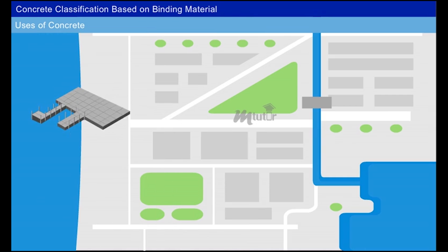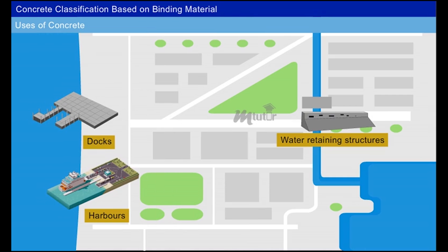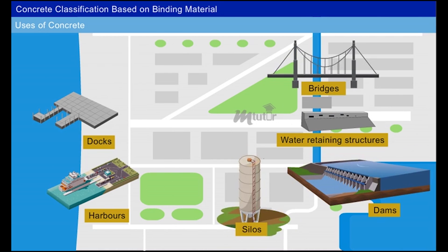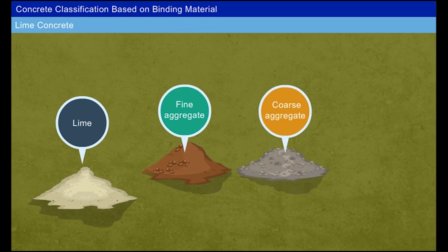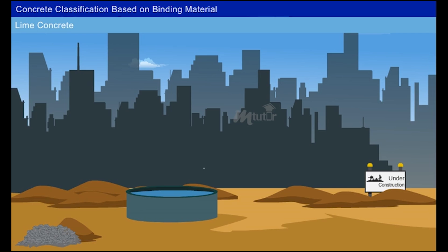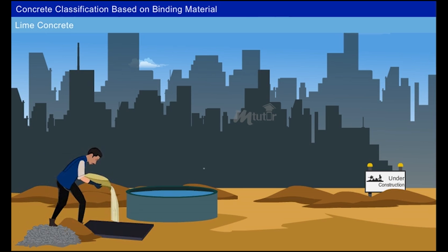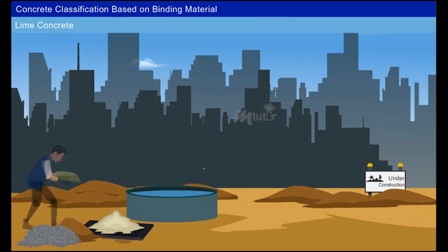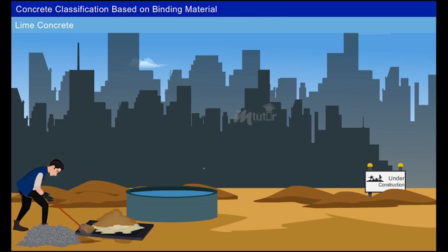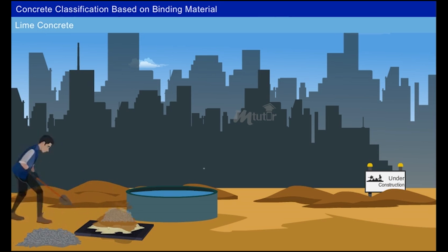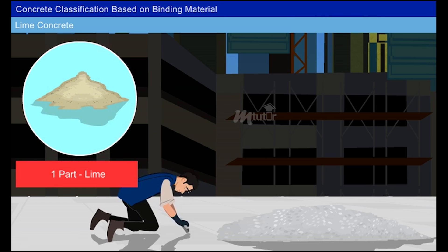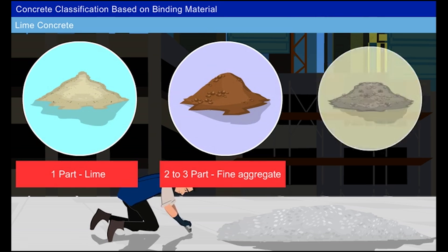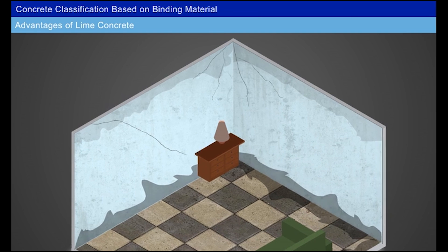Cement concrete is also used for load-bearing structures of docks and harbors, water-retaining structures, dams, bridges, and silos. Lime concrete is a mixture of lime, fine aggregate, coarse aggregate, and water. The main ingredient is hydraulic lime, used as a binding material. It can mix with fine aggregates such as sand or surki, along with coarse aggregates and water in under floors. The usual proportion is one part lime, 2 to 3 parts fine aggregate, and 3 to 4 parts coarse aggregate.